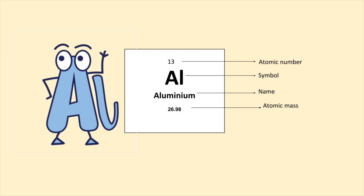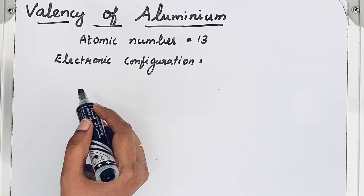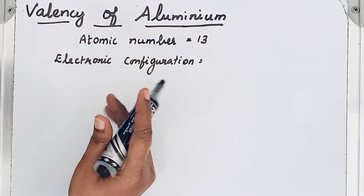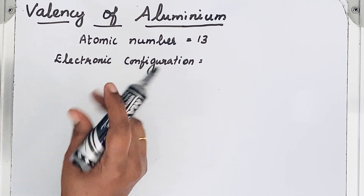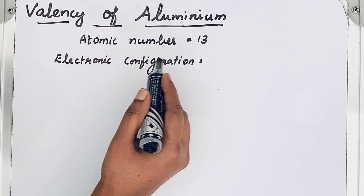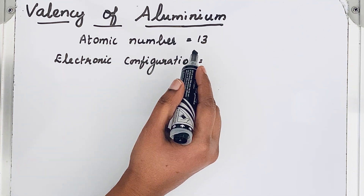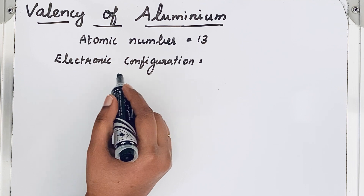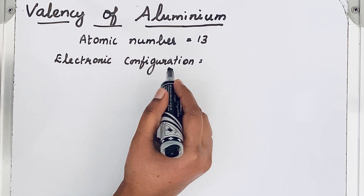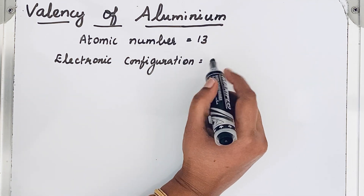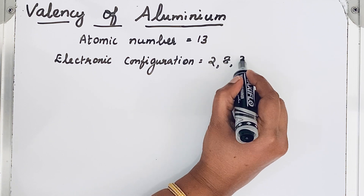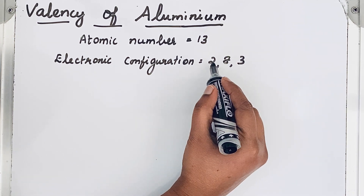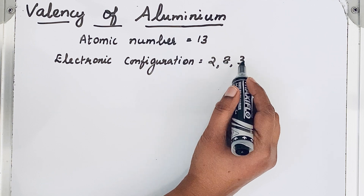From the atomic number we can write the electronic configuration, which tells the arrangement of electrons in an atom. Since the atomic number is 13, the electronic configuration of aluminium is 2, 8, 3. So there are three shells: K, L, and M.